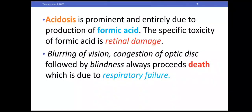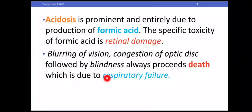Acidosis is prominent and entirely due to the production of formic acid. The specific toxicity of formic acid is retinal damage. Blurring of vision and congestion of the optic disc, followed by blindness, always precedes death, which is due to respiratory failure.